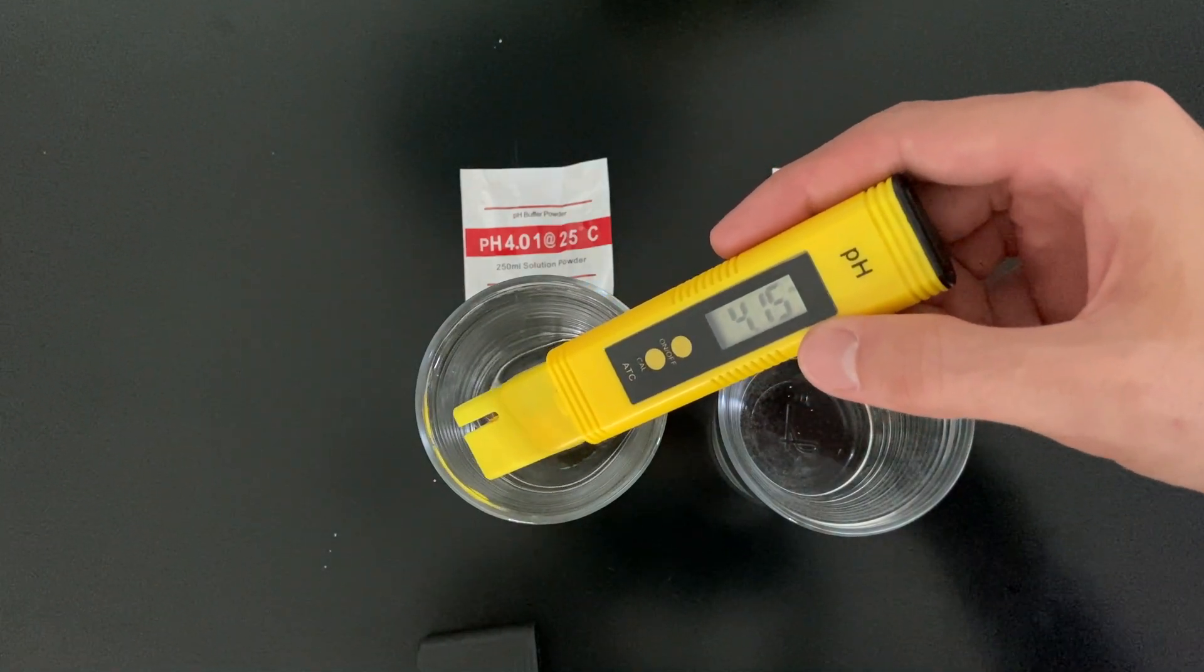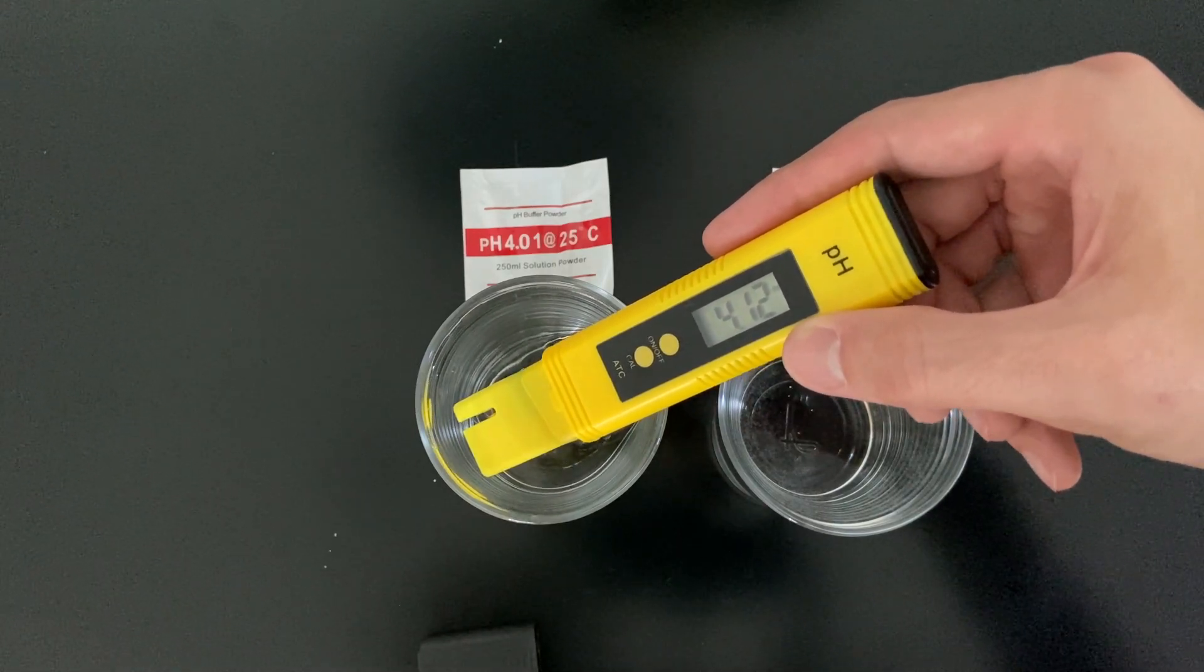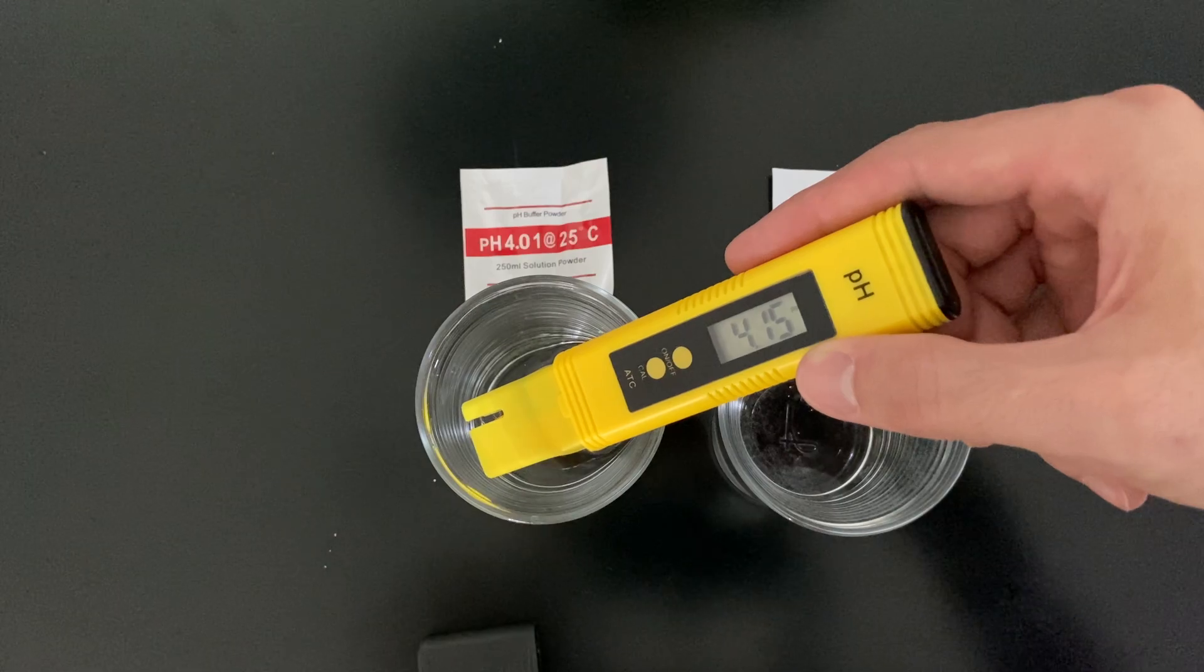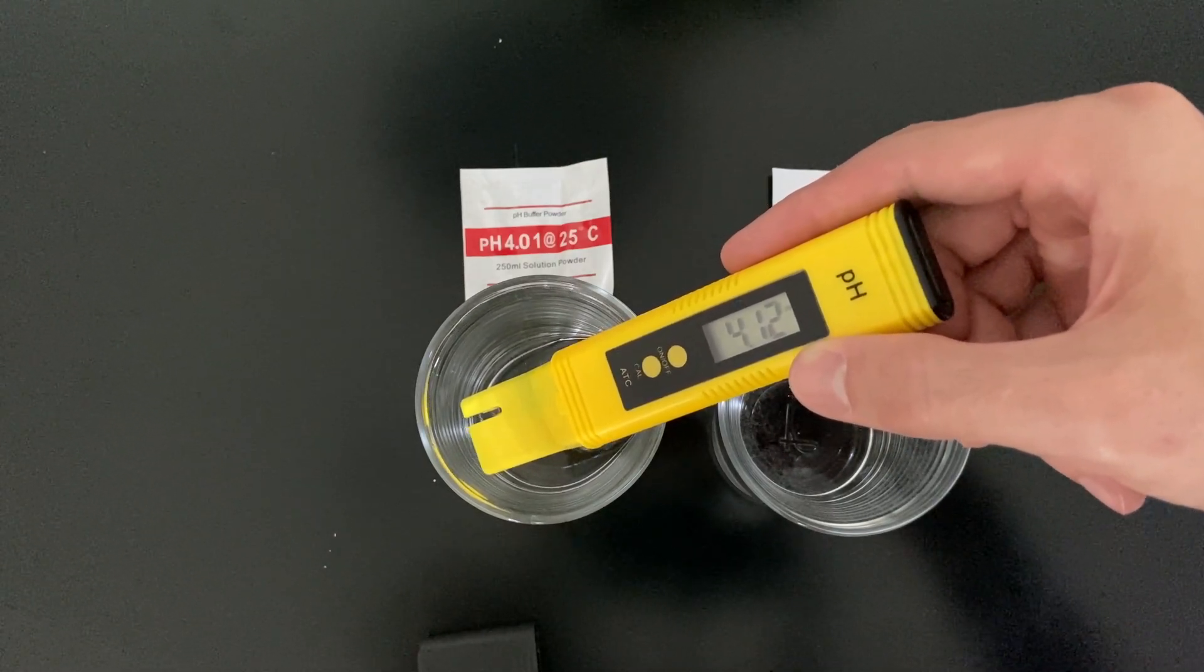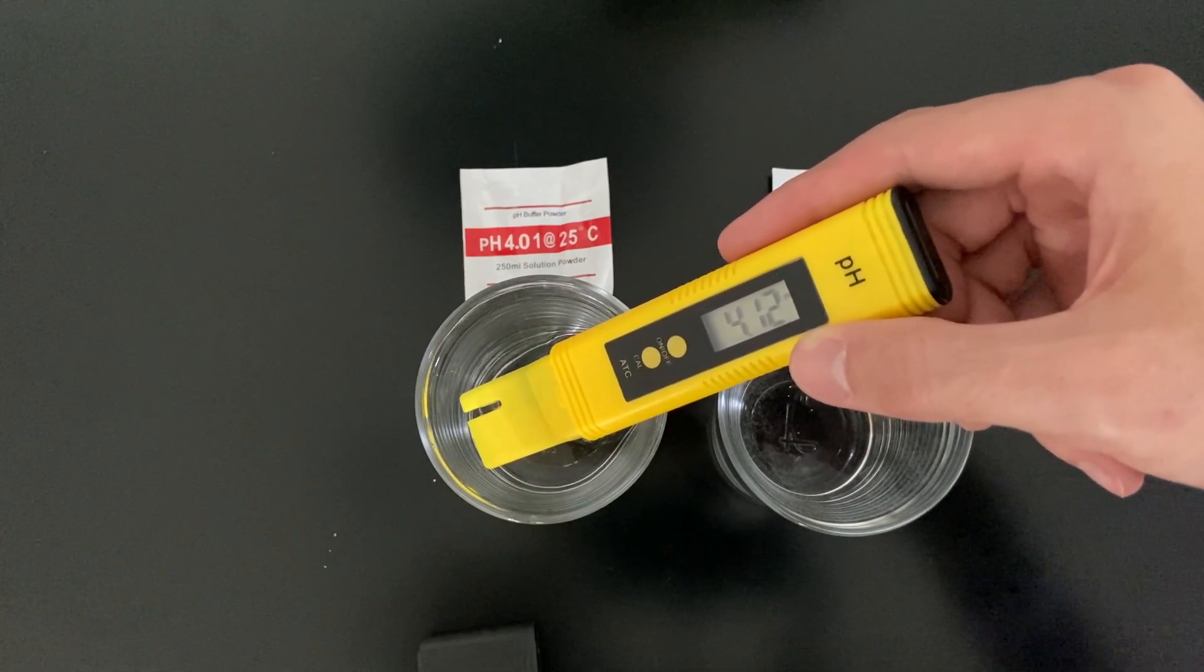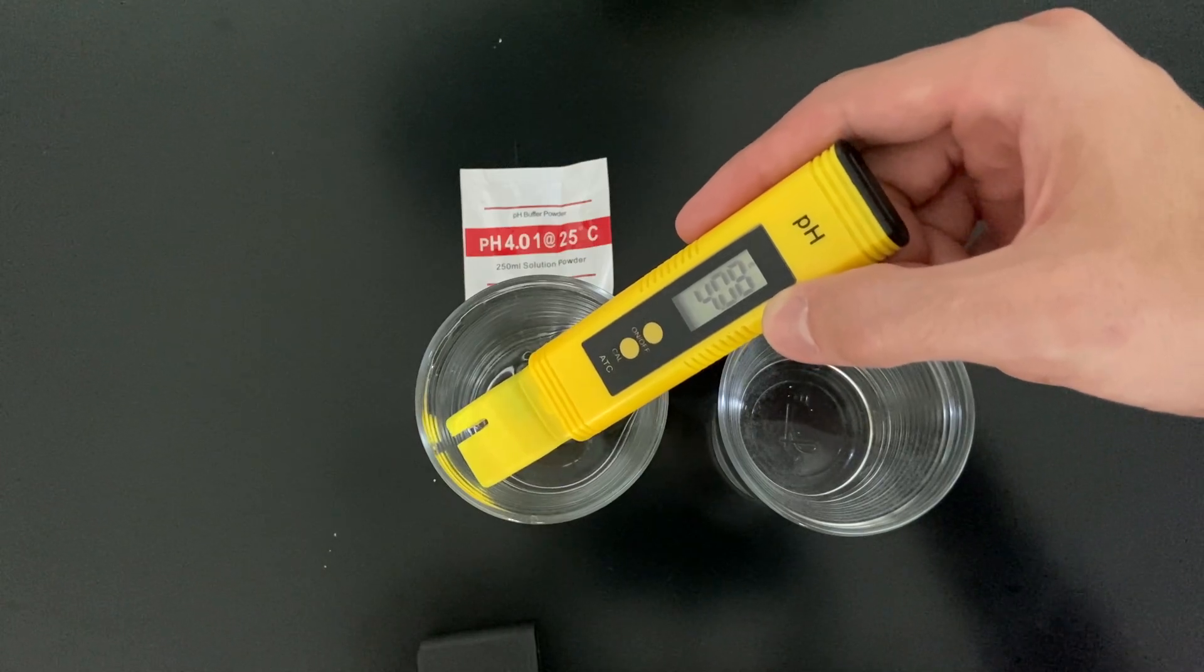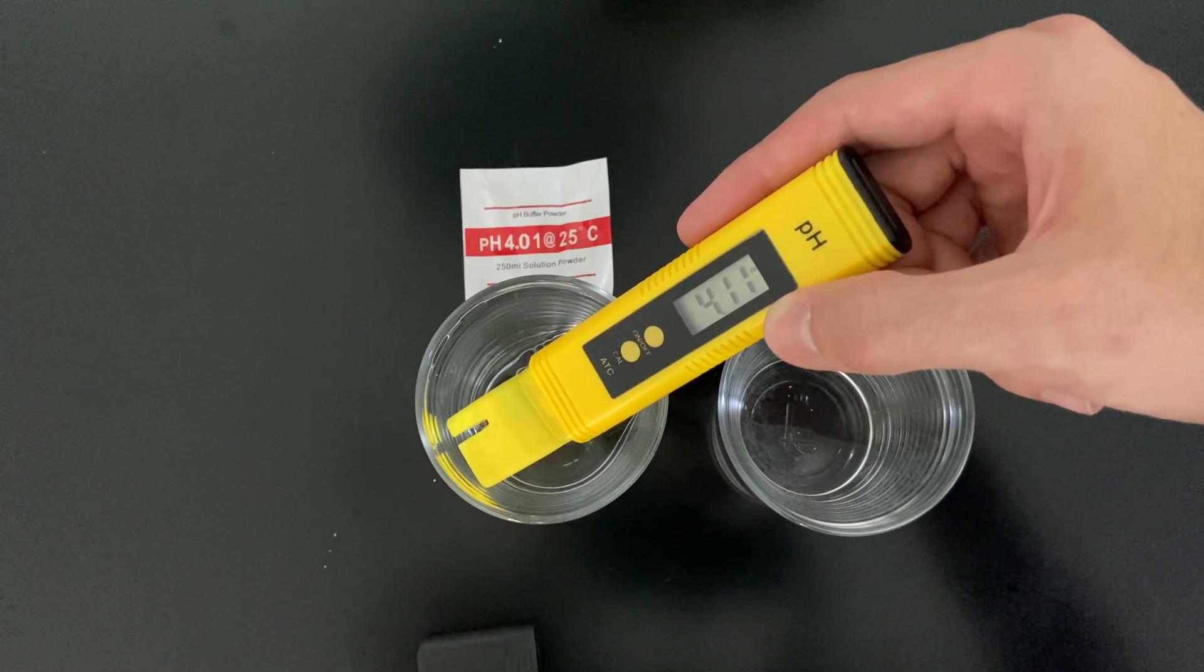Here we can see it's 4.15. The 4.01 powder is what we use to calibrate it, so it's really close. The accuracy of this instrument is ±0.01. Now it's showing 4.08, 4.11, so it's very close to the set value.